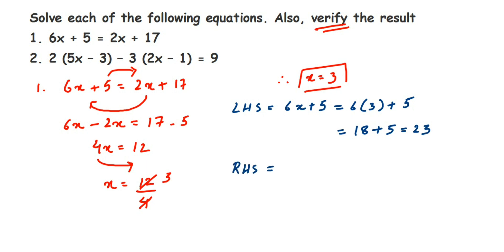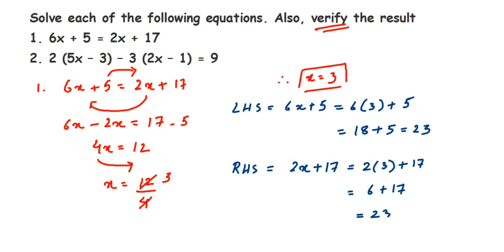Now for RHS: 2x + 17. Substituting x = 3: 2 into 3 is 6, plus 17, which equals 23. Both LHS and RHS give 23, so LHS = RHS — verified! If LHS and RHS are not equal, it means you may have made a mistake and you can cross-check your answer.